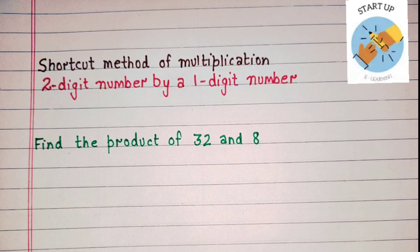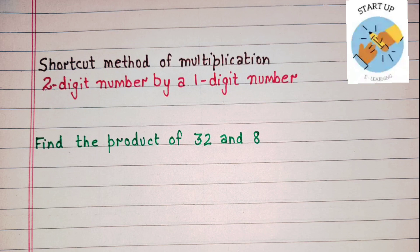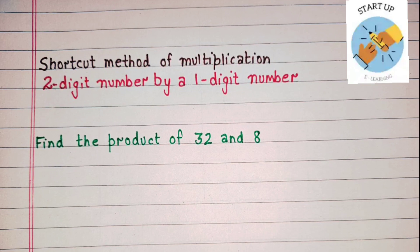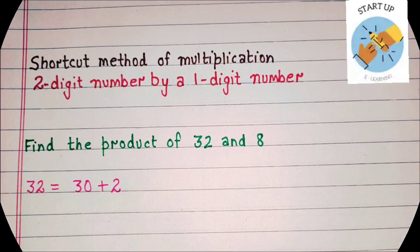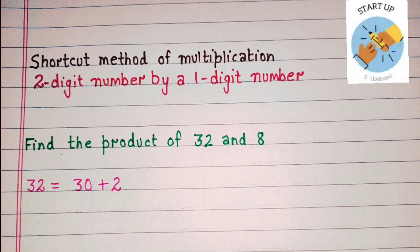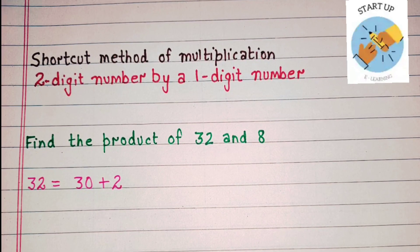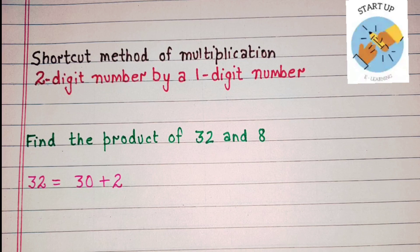Find the product of 32 and 8. Here, 32 is the multiplicand and 8 is the multiplier. Now, we will break 32 into 30 and 2, like 30 plus 2 is equal to 32.